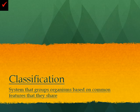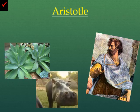Hello there. In this video today, we'll be discussing the subject of classification. Classification, simply put, is a system that groups organisms based upon common features that they share. We'll be talking a little bit about the history, how to use it, and what is comprised of the taxonomic categories. Let's get started.